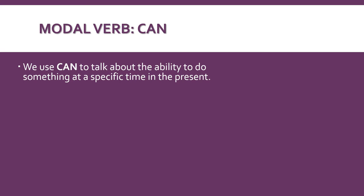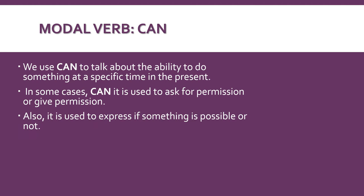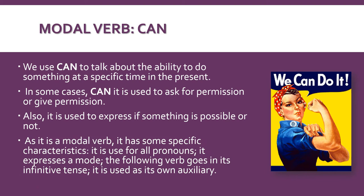So what is modal verb can? We use can to talk about the ability to do something at a specific time in the present. In some cases can is used to ask for permission or give permission. Also it is used to express if something is possible or not.